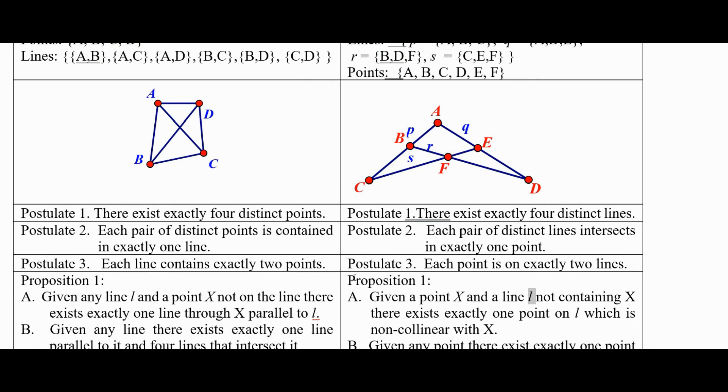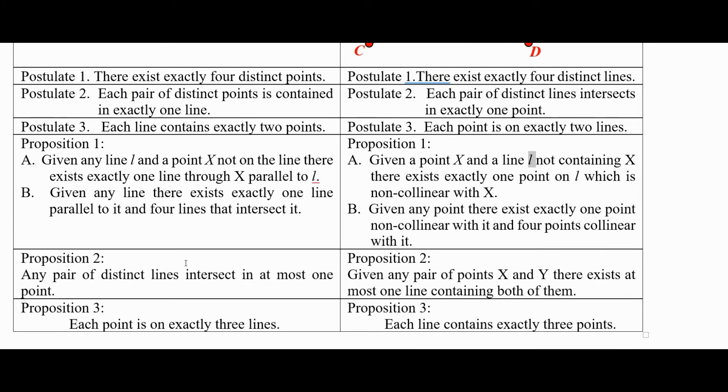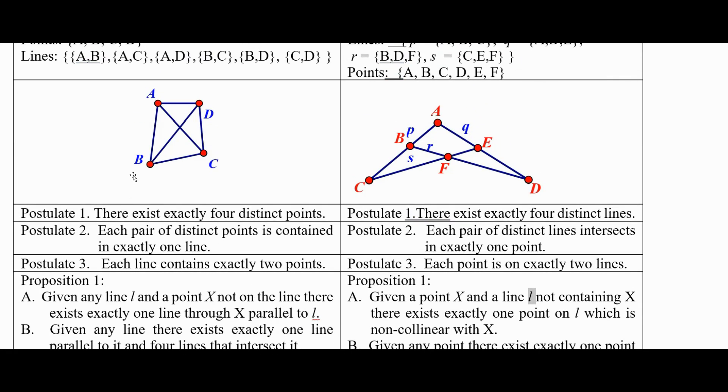So this is just, this is what's meant by the dual there. Another proposition, any pair of distinct lines intersecting at most one point. So if you take two lines, they're either parallel or they intersect once.